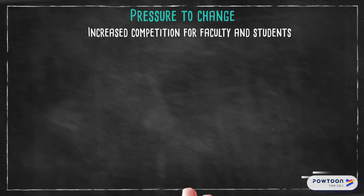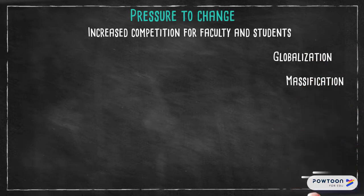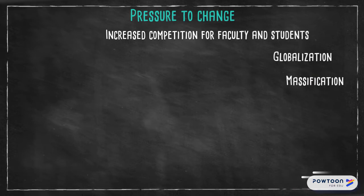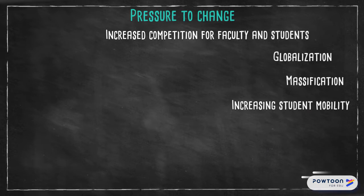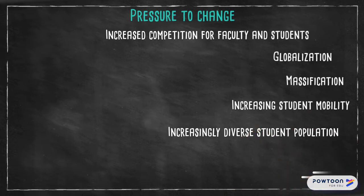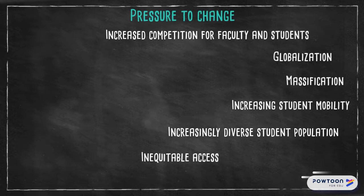First, there is increased competition for faculty and students. This is also connected to globalization, and in many countries there is massification — significantly more students attending and being asked to attend university and college. There is also increasing student mobility and an increasingly diverse student population, including mature students.